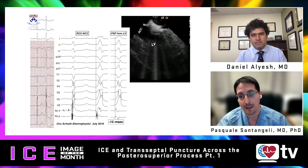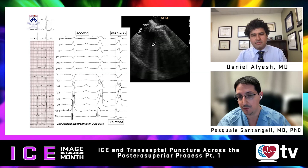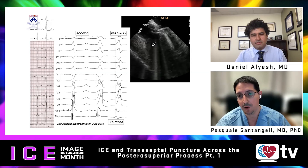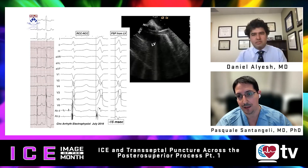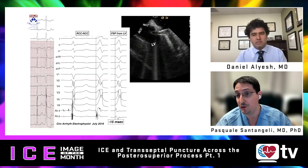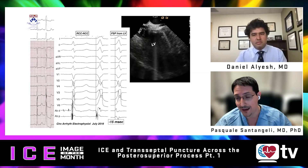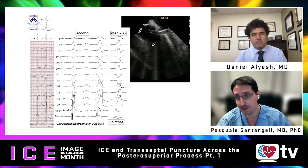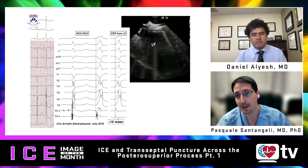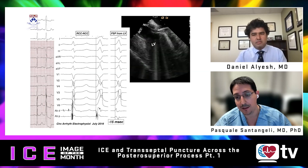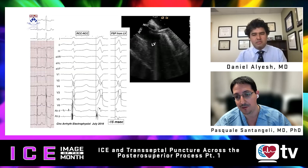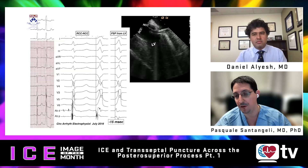During mapping, the catheter is deployed in a retrograde fashion, inferior to the non-coronary cusp in the region of the inferior septal process — the posterior superior process of the left ventricle — right under the junction between the non-coronary cusp and the right coronary cusp. At this site, a 15-millisecond pre-QRS signal was recorded.